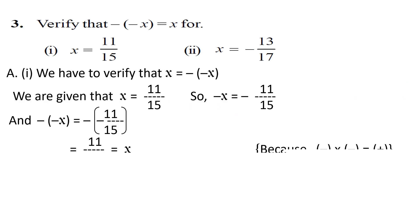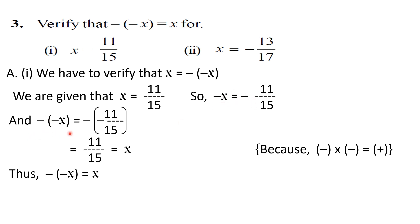We can also solve this by a second method — do practice with both methods and choose whichever suits you best. Method two, part one: we need to verify x equals minus bracket minus x. Given x equals eleven upon fifteen, minus x equals minus eleven upon fifteen. Then minus minus x equals minus bracket minus eleven upon fifteen close bracket equals eleven upon fifteen, because minus into minus equals plus. This eleven upon fifteen equals x, which is the right-hand side, so minus minus x equals x is proved.